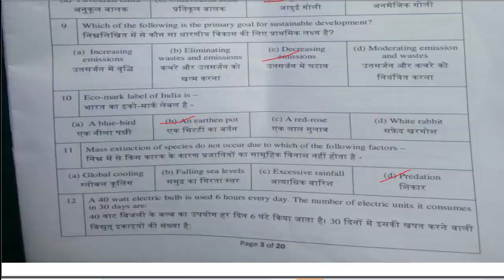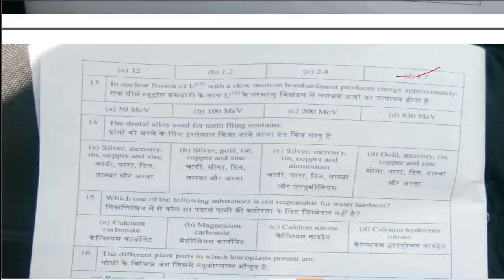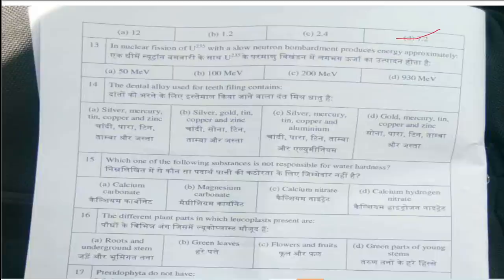Next question: A 40 Watt electric bulb is used 6 hours every day. The number of electric units it consumes in 30 days — this answer is option D, 7.2. Next question: In Nuclear Fission of Uranium-235 with a slow neutron bombardment, produces energy approximately? This answer is option C, 200 MeV.